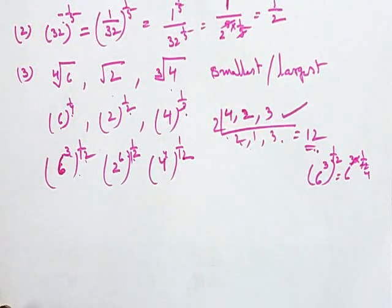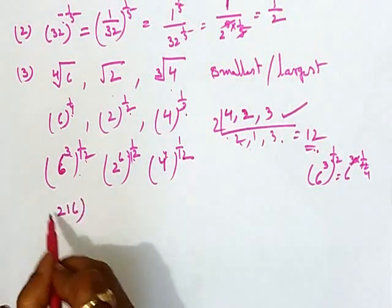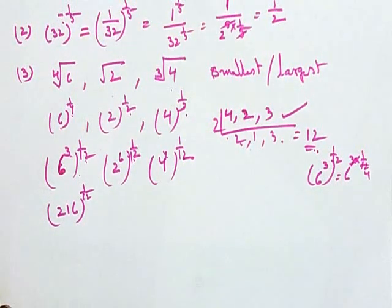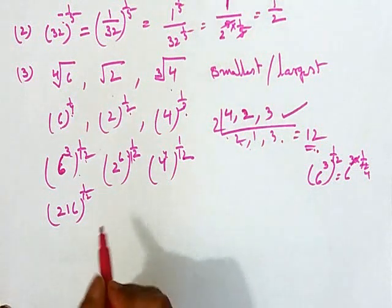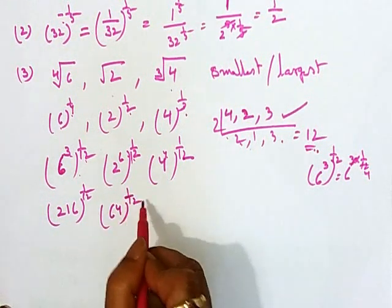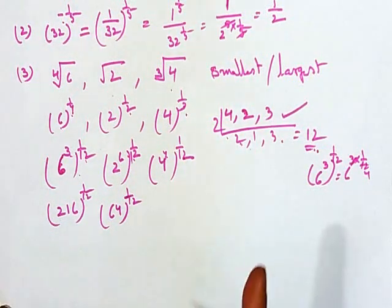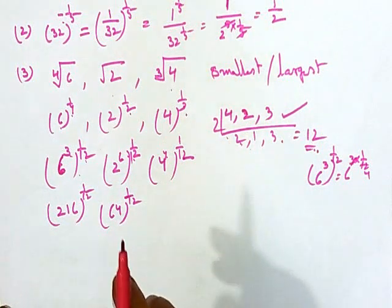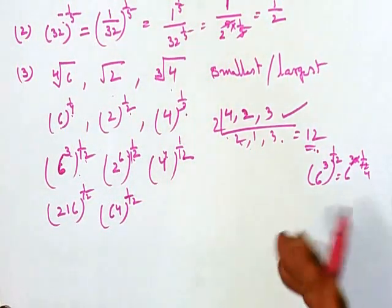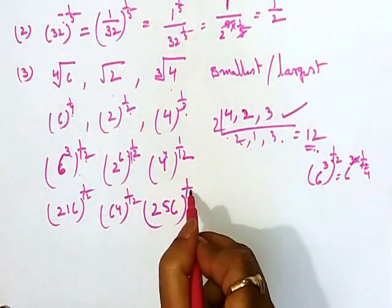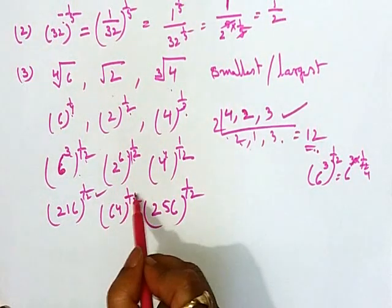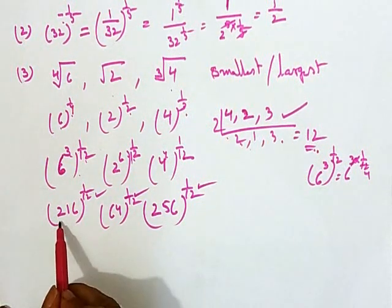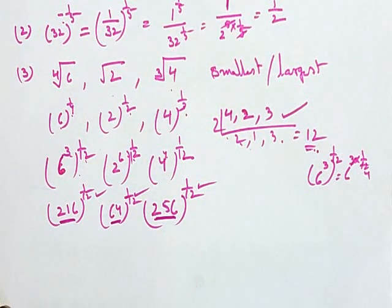Now we compute the base values. 6 cubed is 216, so we have 216 to the power 1 by 12. 2 to the power 6 is 64, so we have 64 to the power 1 by 12. 4 to the power 4 is 256, so we have 256 to the power 1 by 12. Since all the powers are the same now, we just compare the bases: 64, 216, and 256. We can easily identify which is smallest and which is largest.